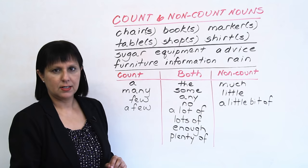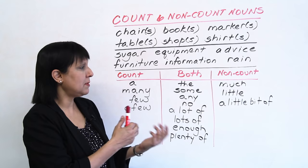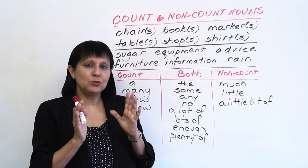So what causes confusion for people is knowing when to say 'many' — can I say 'many information'? 'Much information'? 'Much markers'? 'Many markers'? This causes a lot of confusion for a lot of students. So I'm going to show you a little trick that will help you know when to say many, much, or what you can do if you don't want to make a mistake at all.